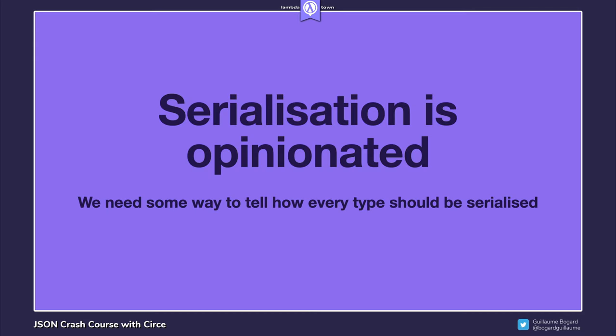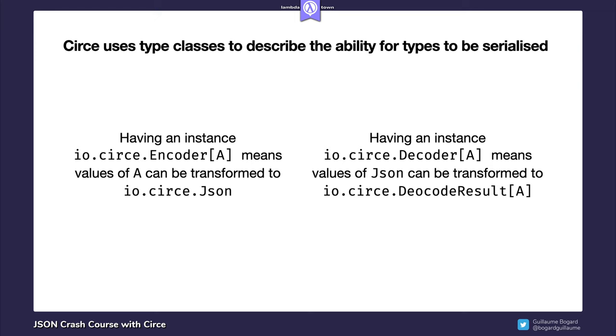So serialization is an opinionated process. Since there are so many ways of turning values of a given type to JSON, we need some way to tell our JSON library how it should be done. Circe does that using type classes. The encoder type class describes how a given type is to be transformed into JSON, while the decoder type class describes how values of a given type should be built from JSON.